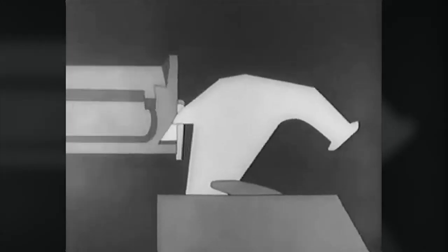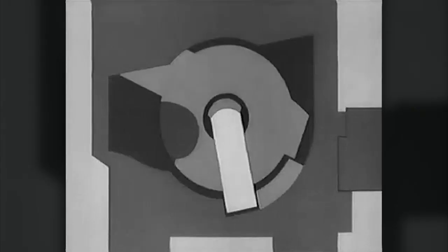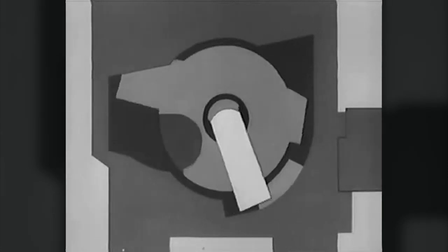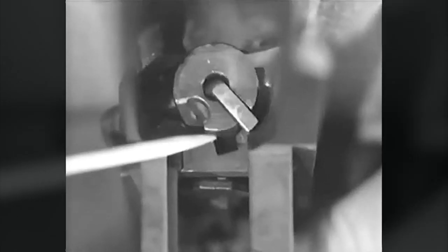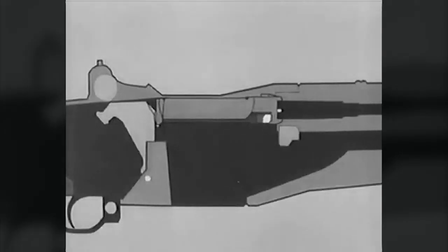At the same time, the bolt camming lug is cammed out of its notch and forces the hammer away from the firing pin tang. This allows the firing pin tang to cam against this surface on the receiver bridge, withdrawing the firing pin from the bolt face. Here is the same action on the rifle. Now the complete action.